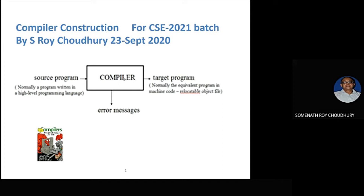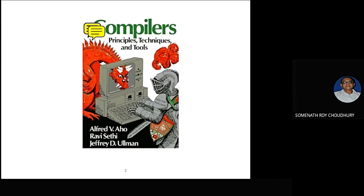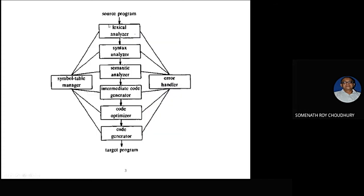Traditionally the name is compiler construction, but it is an interpreter that covers most — 99 percent of things are common. I am following this book, which you have already received, and there are other materials also. The best thing to understand is how many levels a compiler involves. Generally, every compiler is a minimum two-pass — not a single pass.